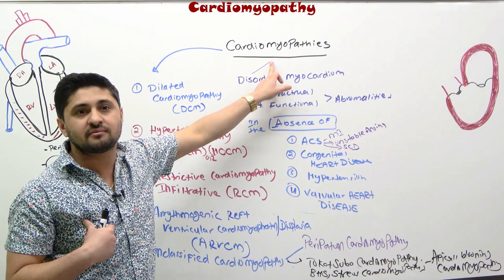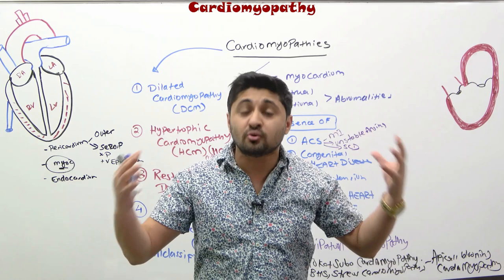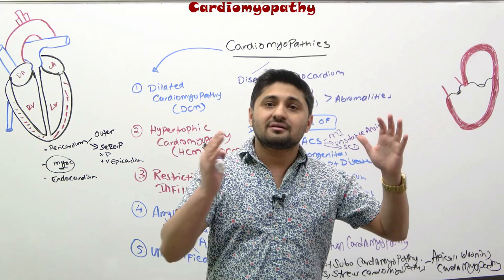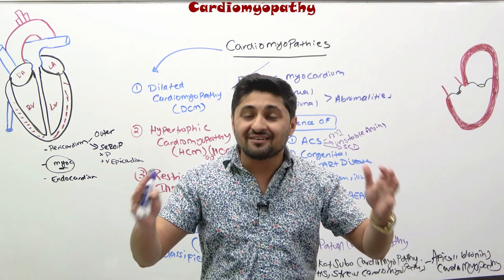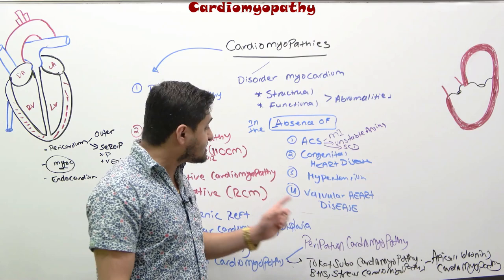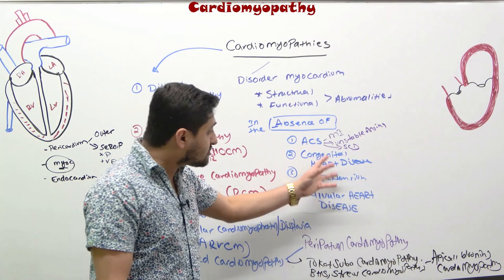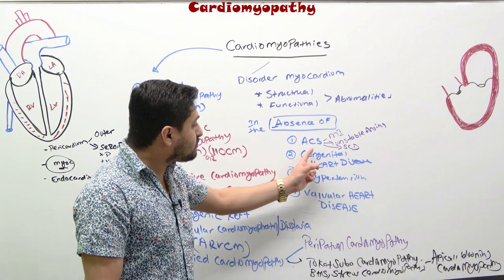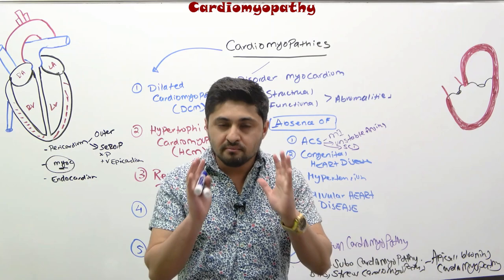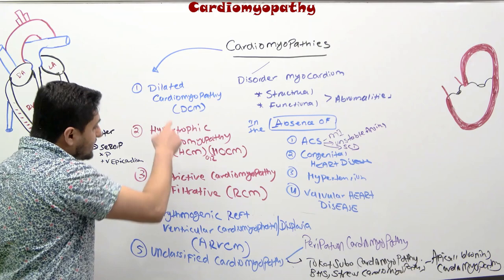So to summarize: cardiomyopathies are a group of disorders that result in myocardial dysfunction — structural and functional abnormalities of the myocardium — in the absence of coronary artery disease, congenital heart disease, hypertension, and valvular heart disease. If any of those conditions are present, the disorder cannot be classified as cardiomyopathy. Make sure you know this definition.